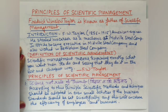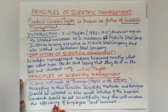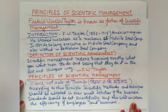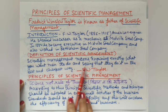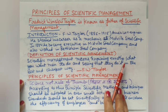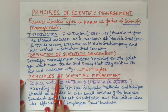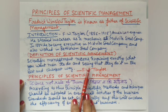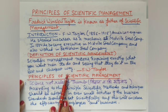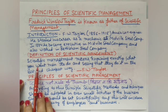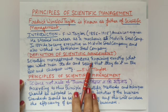The definition of scientific management, as given by F.W. Taylor, is: scientific management means knowing exactly what you want men to do and seeing that they do it in the best and cheapest way.